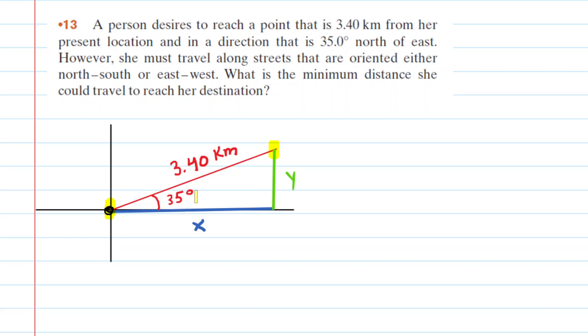However, the person must travel along streets that are oriented north, south, or east or west. So unfortunately, instead of walking straight from the origin to the destination, the person is going to have to walk first along the x-axis to this point, and then she's going to have to turn northward and walk along the y-axis to get to her destination.